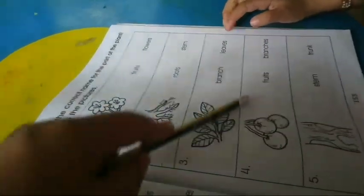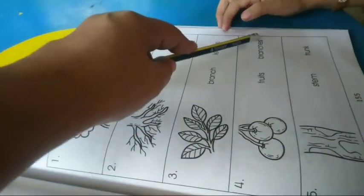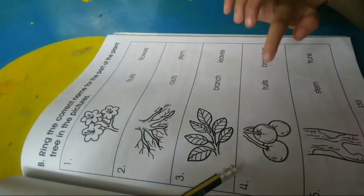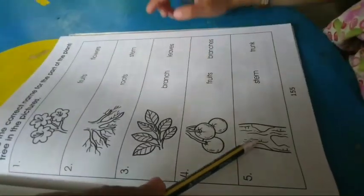These are fruits or branches? Asan yung fruit? Yan. Trunk.